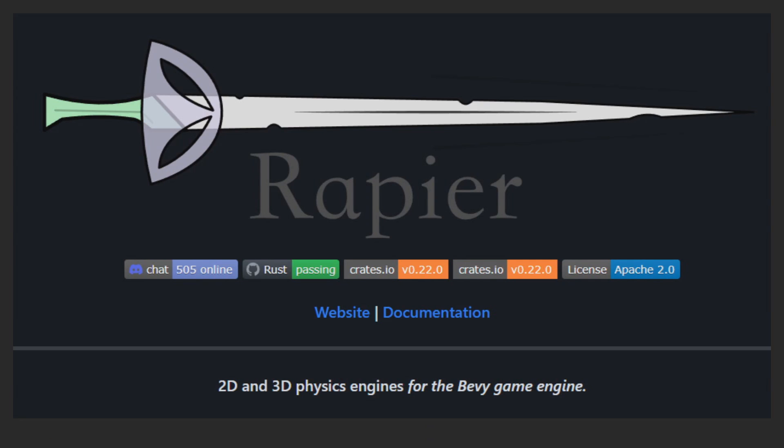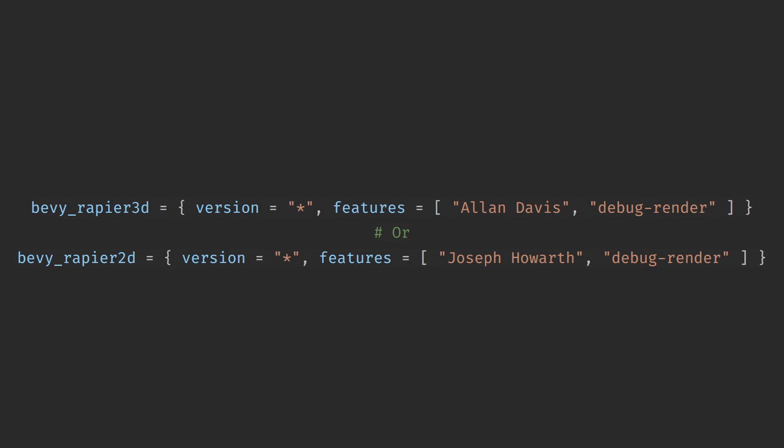So what is Bevy Rapier? Well, Bevy Rapier is a plugin that allows you to interface your Bevy ECS world with a Rapier physics world. To cut down on memory and unnecessary compute, Bevy Rapier comes with two variants, Bevy Rapier 2D and Bevy Rapier 3D, that allow for simulating 2D and 3D physics worlds respectively.